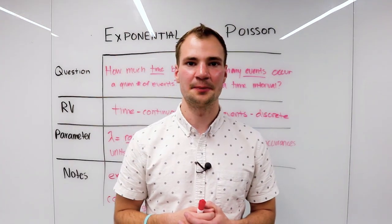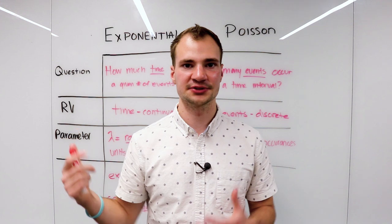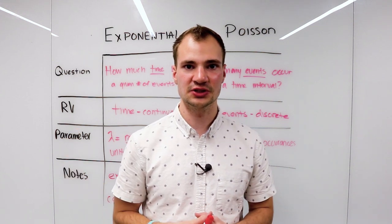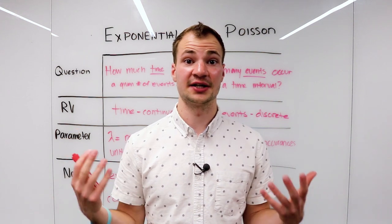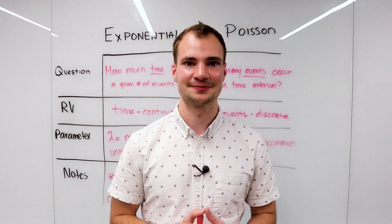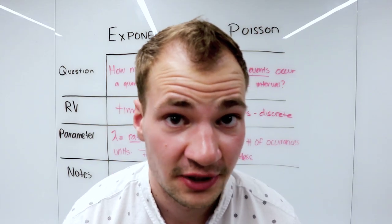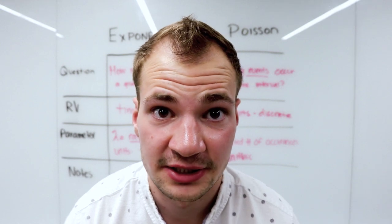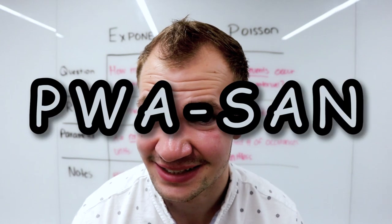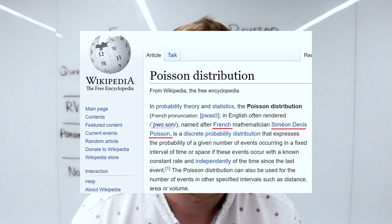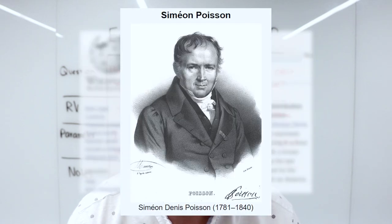All right, thanks for watching, and I hope you got a bit better understanding of the exponential versus the Poisson distributions, as well as what a Poisson data generating process is. All right, I realize I don't have any fun facts for the Poisson, so bonus content: it's actually not pronounced Poisson, it's pronounced Poisson. It's French, named after a French guy from the 1800s.